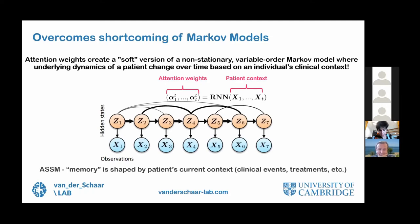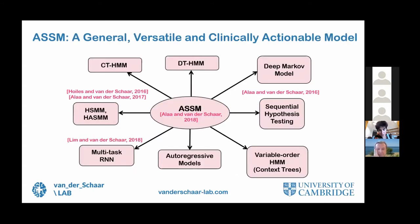These attentive state-space models overcome the shortcomings of Markov models because the attention weights create a soft version of a non-stationary variable order Markov model where the underlying dynamic of a patient changes over time depending on the individual's context — which may contain more static information such as genetic information, as well as the weights so far. The memory is shaped by the patient's current context, clinical events, transitions over time, and even treatments. We create a generalization through attentive state-space models of other classes of models: hidden Markov models, hidden semi-Markov models, variable order Markov models, deep Markov models. You want such a versatile model to uncover from data how much memory you really need when modeling disease trajectories — it may be that an attentive state-space model becomes just a hidden Markov model for one class of patients but not another.